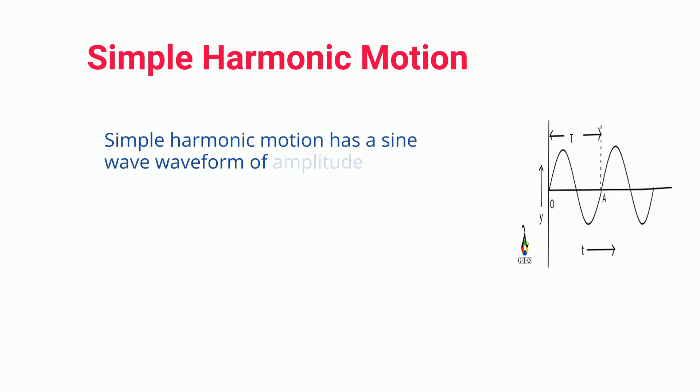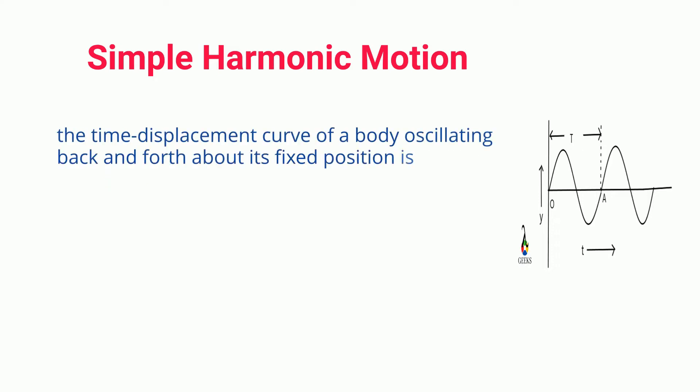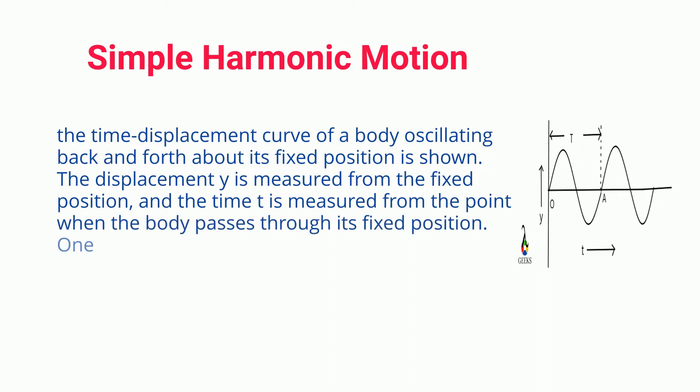Simple harmonic motion has a sine wave waveform of amplitude versus time. In the above given figure, the time displacement curve of a body oscillating back and forth about its fixed position is shown.